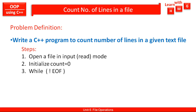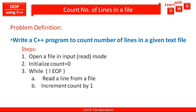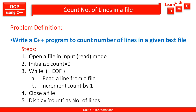While not end of file, read a line from the file and increment the count variable by one — that is, count++. This loop will continue until the end of file character is detected. Once EOF is encountered, the loop will stop, then we close the file and display the result — the count — as the number of lines.